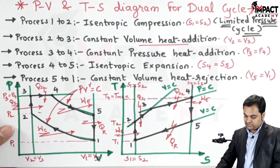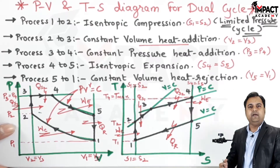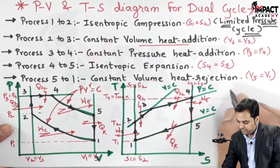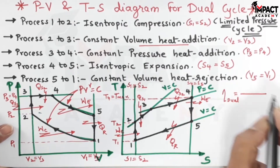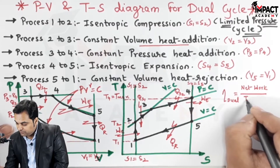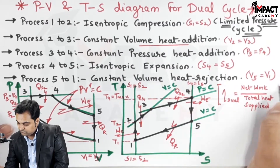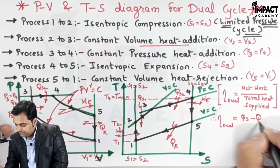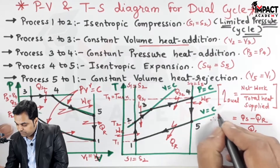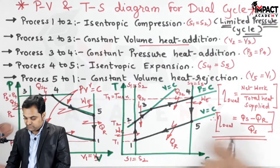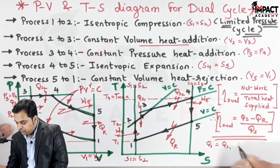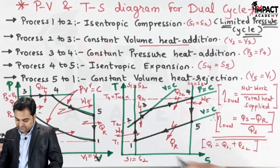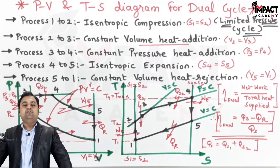This was the PV and TS diagram for the dual cycle. For the efficiency formula of the dual cycle, remember it in a conceptual manner — don't memorize the final formula because it is very large and you can make errors. The efficiency of the dual cycle equals net work divided by total heat supplied. Net work is heat supplied minus heat rejected. Total heat supplied QS is the addition of QS1 and QS2 — heat supplied at constant volume plus heat supplied at constant pressure. Heat rejected QR is at constant volume.